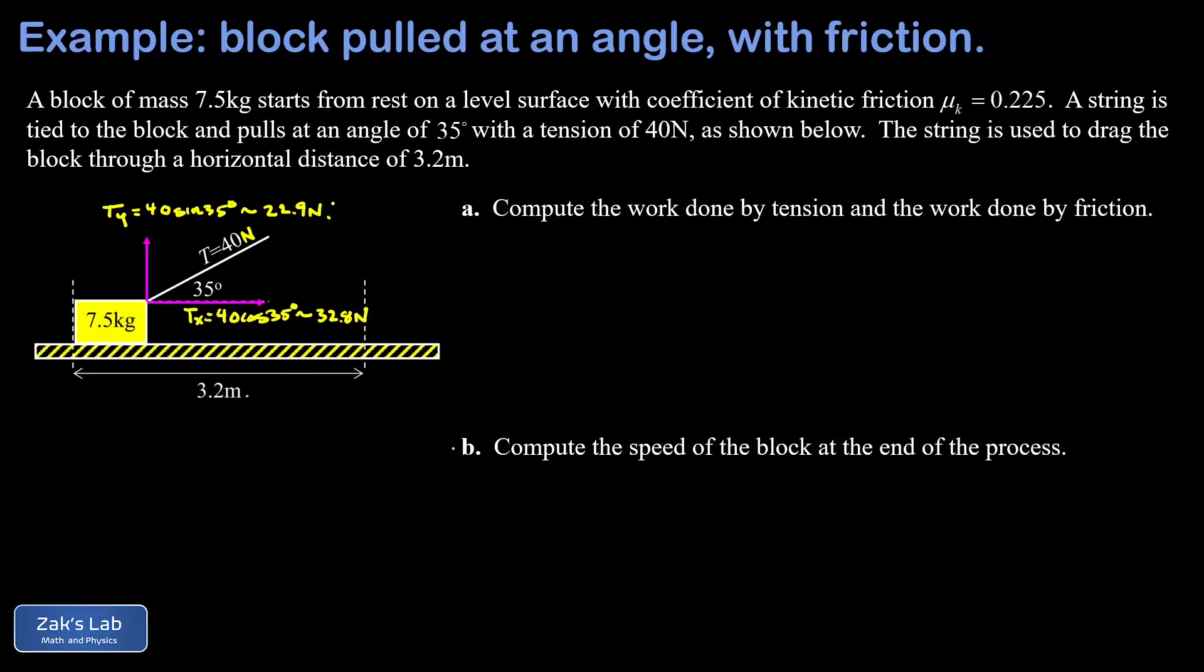As a next step, let's get in the normal force vector and the weight vector. The weight vector, or the force of gravity, of course is mg. I know my mass, I may as well put a number on it right here in the diagram. So m is 7.5 kilograms, we usually use 9.8 for g, and this gives me 73.5 Newtons.